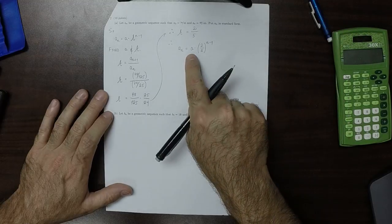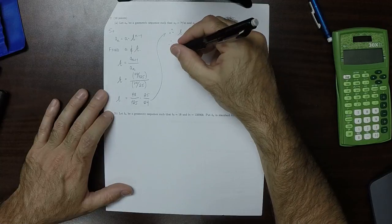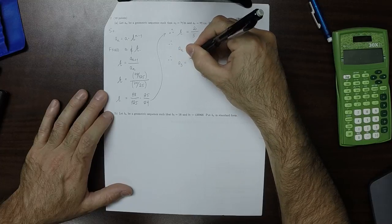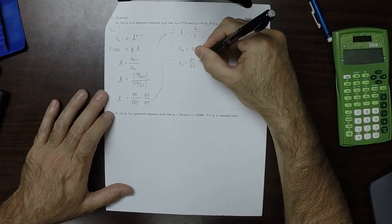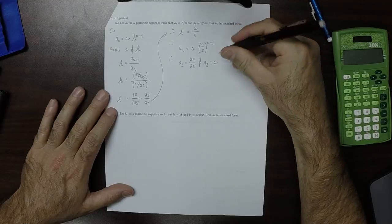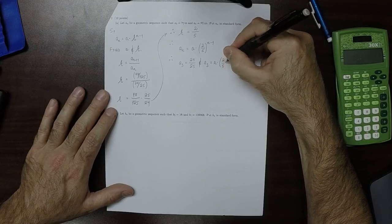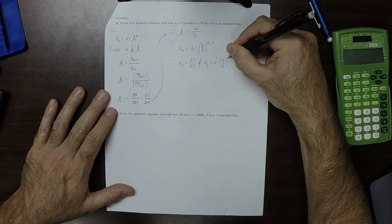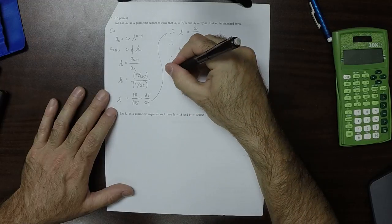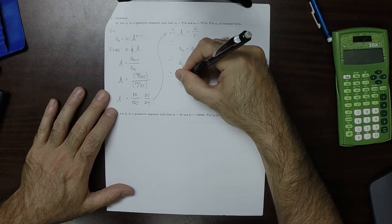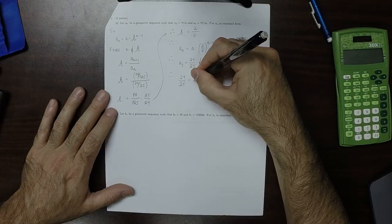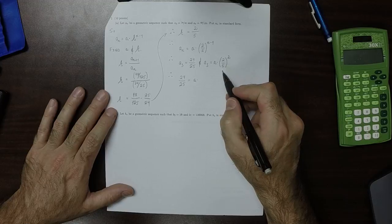To determine the value of a, we can use either one of these pieces of information. We're given the data that a₃ is 24 over 25. We also know that a₃ is equal to the unknown a multiplied by 2/5 squared.